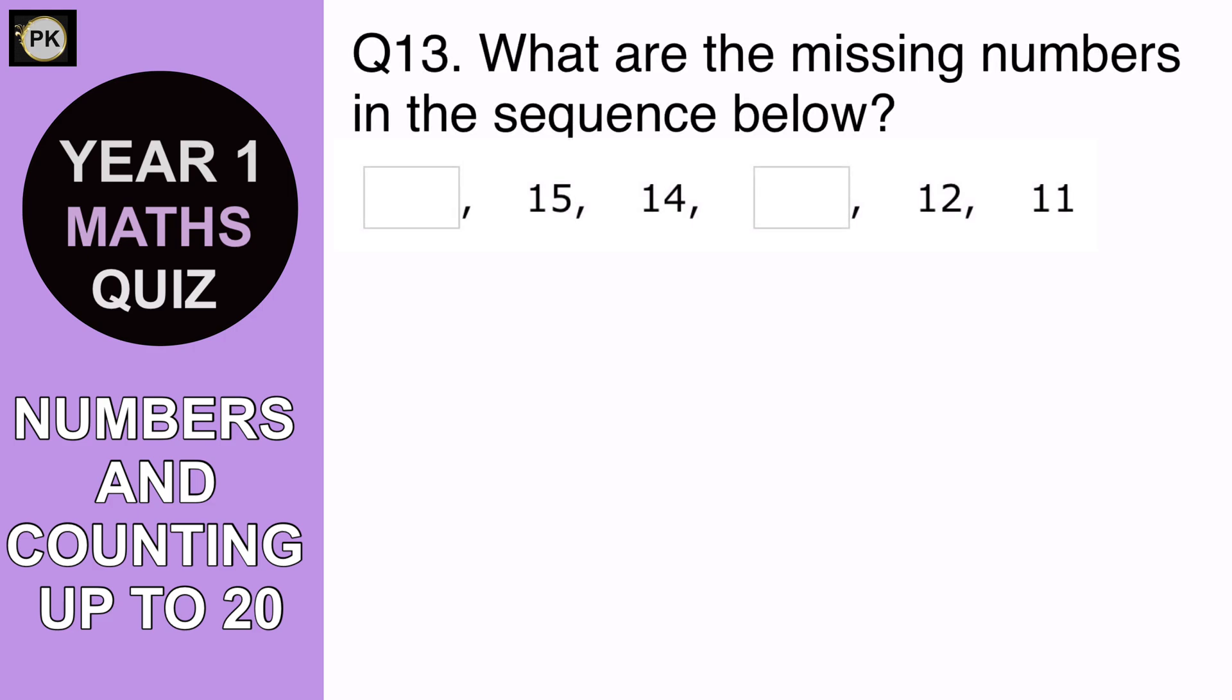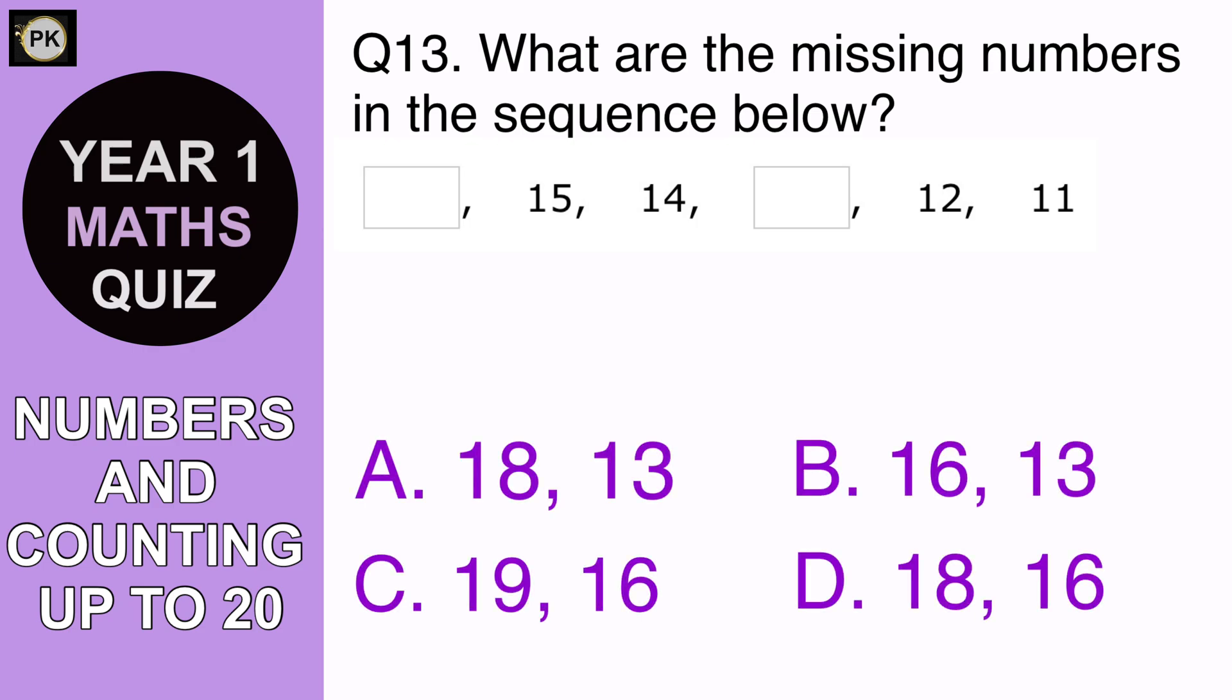What are the missing numbers in the sequence below? A 18 and 13, B 16 and 13, C 19 and 16 or D 18 and 16. And the answer is B 16 and 13.